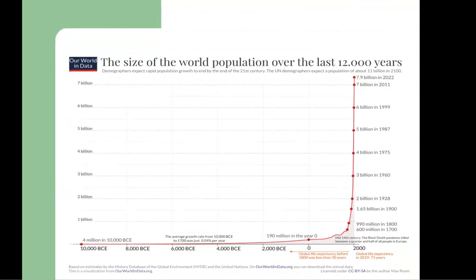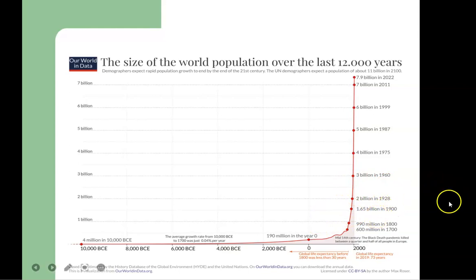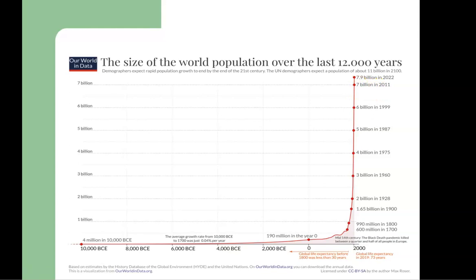Look at this figure: it took many years for the world population to reach 1 billion in the year 1800. Then it reached 2 billion in 1928, 3 billion in 1960, and 4 billion in 1975. Similarly, in 1999 the world population reached 6 billion, and in 2011 it was 7 billion. Today in 2023 the world population is a little more than 8 billion. This is how population has grown so rapidly over time.